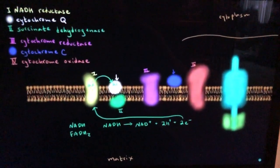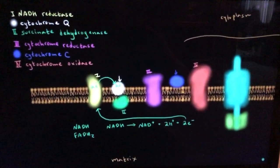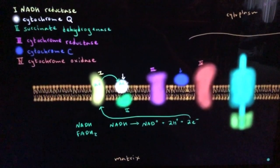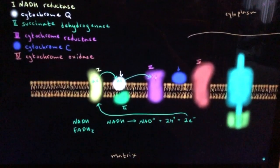So now enzyme number 1 gets oxidized because it loses electrons. But cytochrome Q gets reduced because it gains electrons. And then the same thing will happen with the next enzyme. Cytochrome Q will pass those 2 electrons on to the next enzyme.